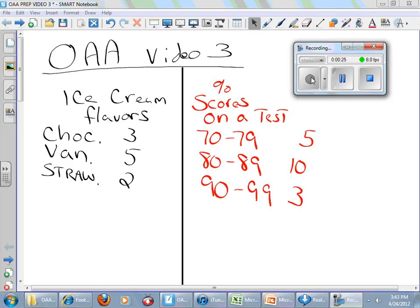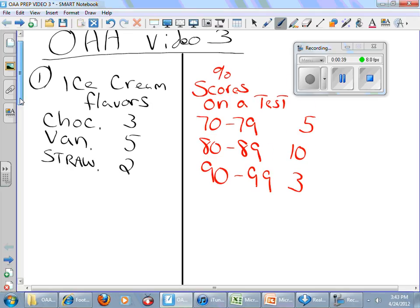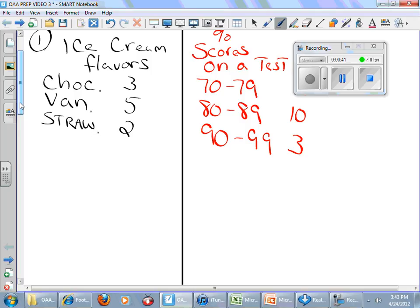All right, the first one, example number one is we took a survey of kids' favorite flavors of ice cream cones. And we surveyed ten kids and we came up three voted for chocolate, five for vanilla, and two for strawberry. What's the best type of graph for this? Well, the best type of graph here would be a bar graph. Why?